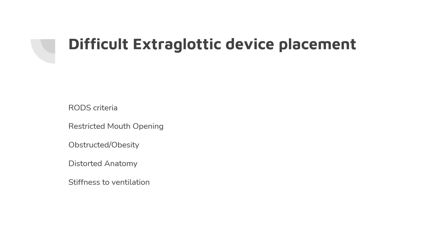For difficult extraglottic device placement, we use the RODS criteria: R stands for restricted mouth opening, O for obstruction or obesity, D for distorted anatomy, and S for stiffness to ventilation as seen in COPD and pulmonary edema patients.